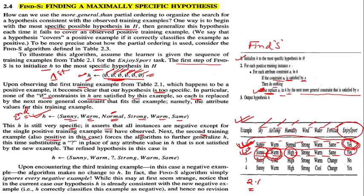First we check whether the example is positive or negative — if it is negative, we won't consider it at all. Since it is positive, we must further generalize H by substituting a question mark in place of any attribute value not satisfied. 'High' is inconsistent with 'normal', so we replace 'normal' with a question mark. The updated hypothesis becomes: sunny, warm, ?, strong, warm, same.